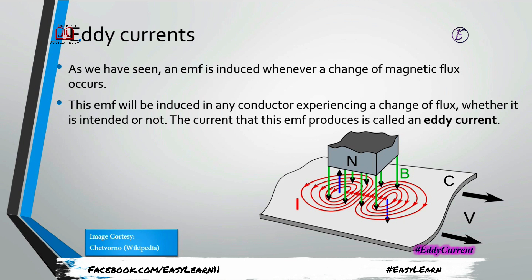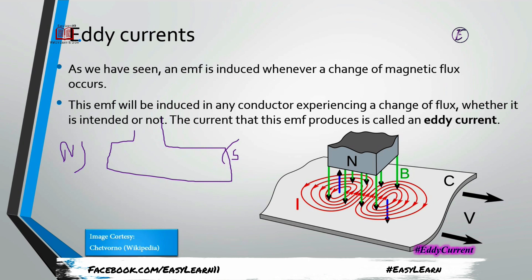The same EMF is induced whenever a change in magnetic flux occurs. For example, there is a north pole and a south pole; in the presence of a strong magnetic field, if the coil is rotated it changes the magnetic flux, and an electromotive force is induced in the coil. This is a useful EMF that we use for our applications.